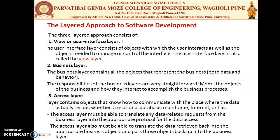The responsibility of the view or user interface layer is to display the data — it doesn't know where it came from or what business logic was applied. The business layer always calculates the business logic; it doesn't know where the data is stored but handles the request and response. The access layer communicates with the places where data actually resides — whether a database, mainframe, internet, or file — takes the data and transfers it to the business layer, which then gives it to the user interface layer to display on screen.